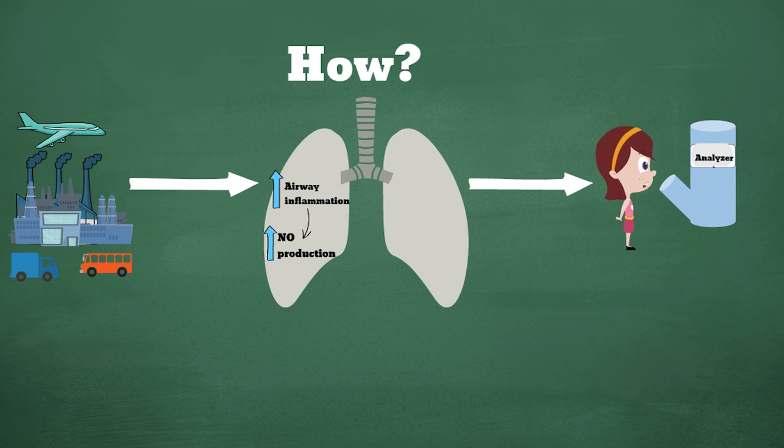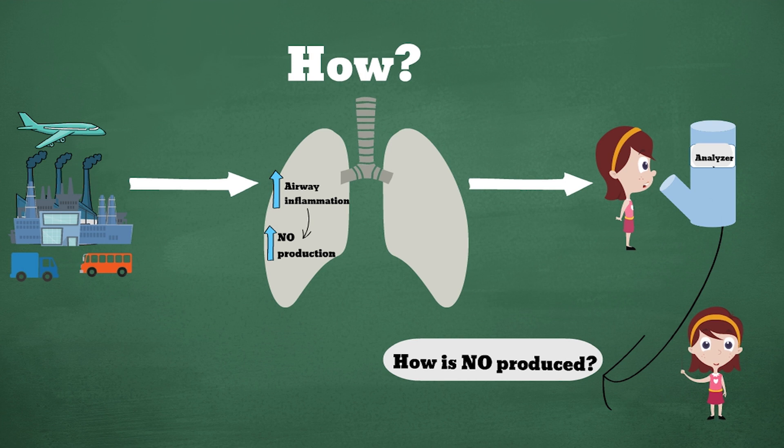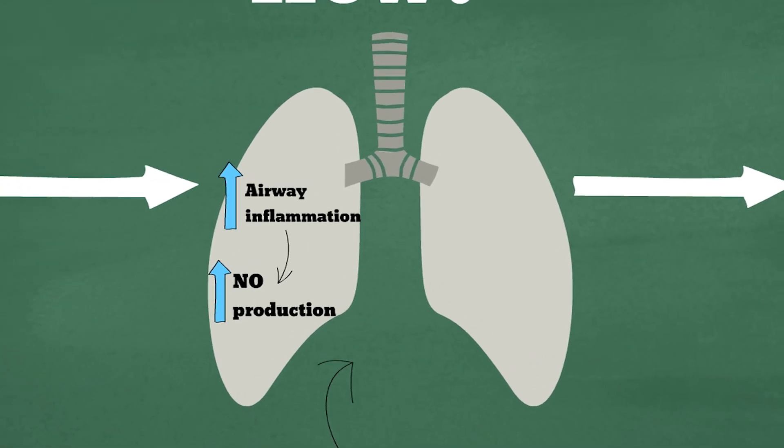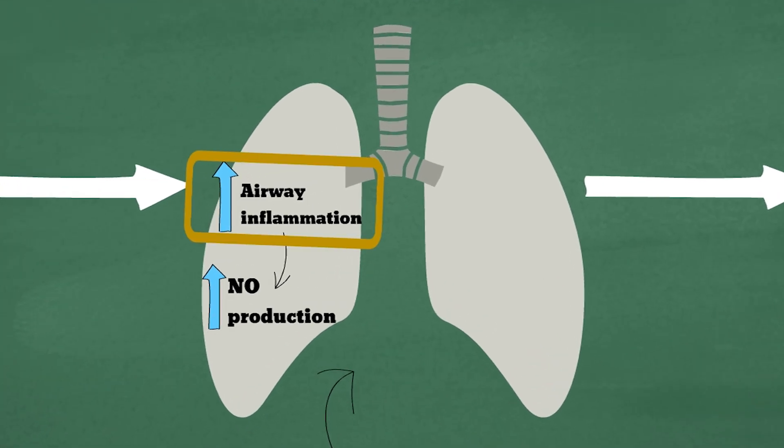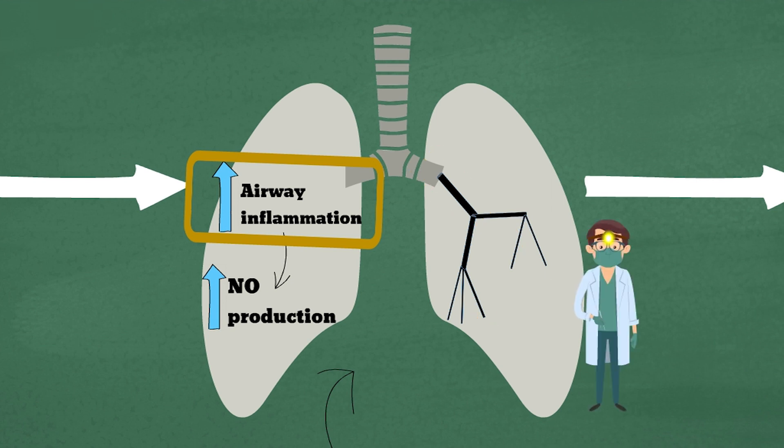But it gets better. The biological processes that cause NO production can be described by a physiological mathematical model. So not only does NO help us detect airway inflammation, we can use statistics to learn where exactly in the lungs NO is produced without actually cutting open a human body.